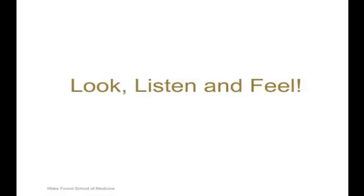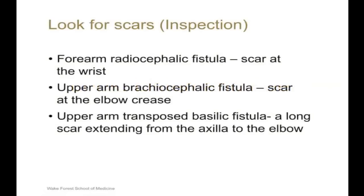So what does one have to do to get a good physical examination? Three simple steps: look, listen, and feel. First and foremost, it is necessary to identify the type of AV fistula. This helps in understanding the anatomy for proper cannulation of the access and also helps with standardized documentation in the patient's medical records.